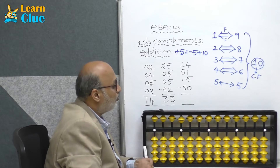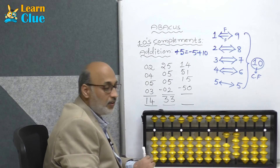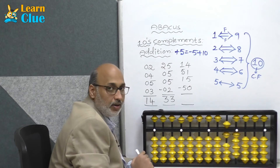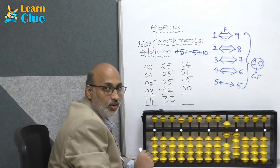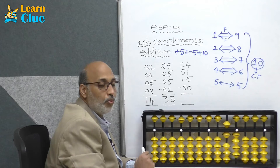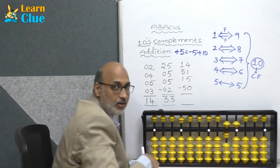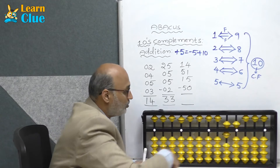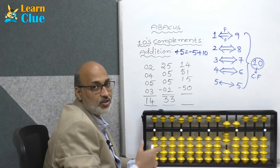Let's see the next problem: 14 — that is 10 plus 4. Then 51 — that is plus 50 plus 1. Now see, will it be solved in 5s complements? Let's try. What is the technique of plus 1 in 5s complements? It is nothing but plus 5 minus 4. Now they are asking plus 15 — that is plus 10 plus 5. Who is the friend of 5? 5 itself.